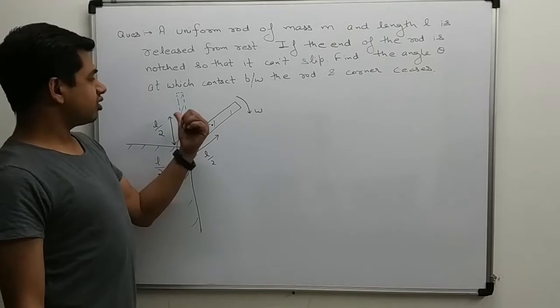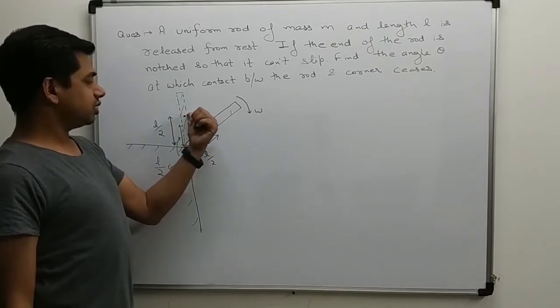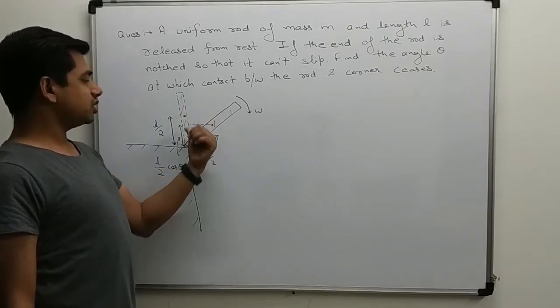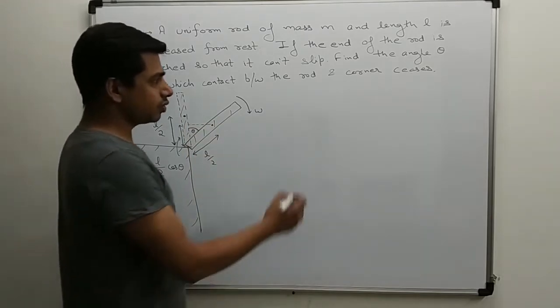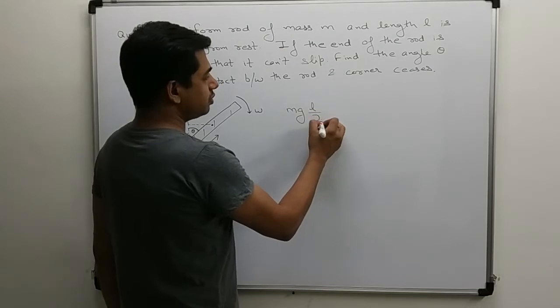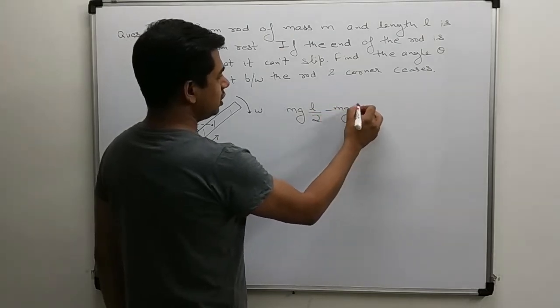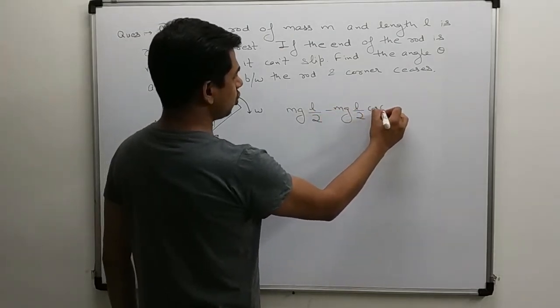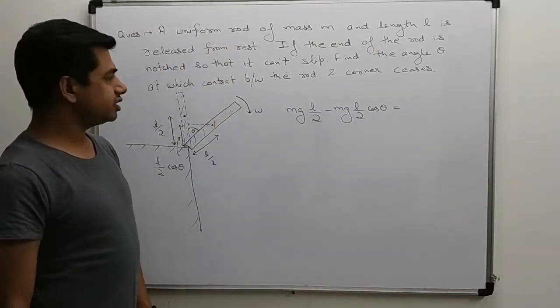The center of mass was at l by 2 height. Now at what height? L by 2 cos theta. So loss in potential energy is Mg l by 2 minus Mg l by 2 cos theta. This is the loss in potential energy.